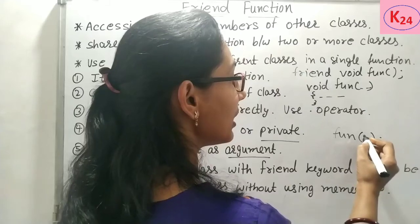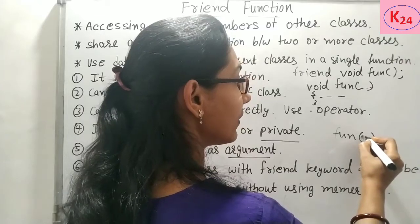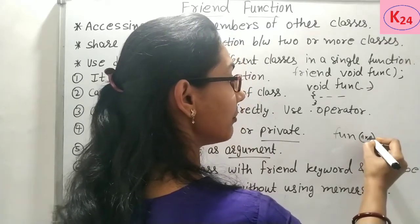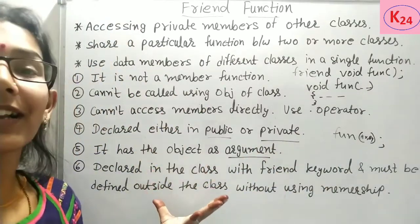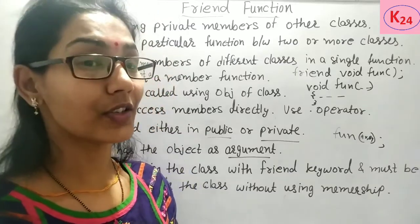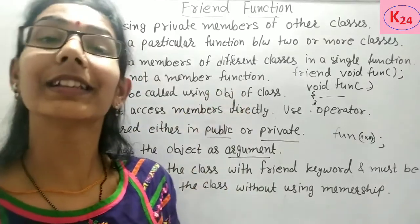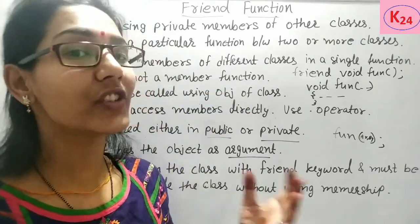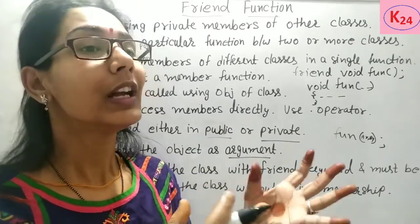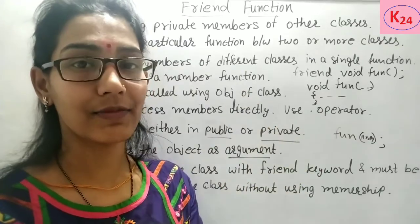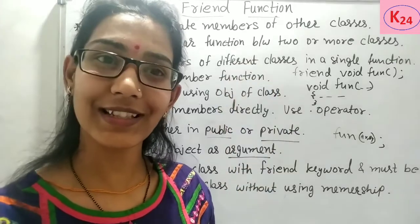Fifth, the friend function has objects as arguments. Since we are not calling the friend function using an object, we pass objects of the class type as arguments — for example, if classes are A and B, we pass 'A x' and 'B y' as arguments. These are the basic characteristics of friend function. Friend function is an important function used for accessing private members of different classes, sharing functions between classes, and accessing data members within a single function.